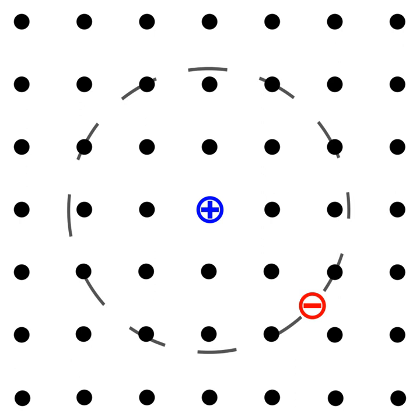This is because of both the screening of the Coulomb force by other electrons in the semiconductor, i.e. its dielectric constant, and the small effective masses of the excited electron and hole.